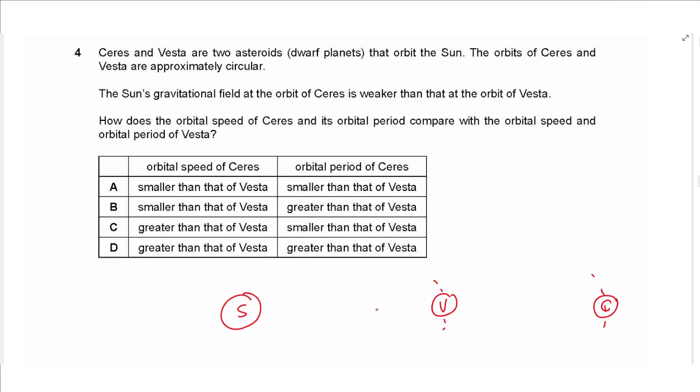How does the orbital speed of Ceres and its orbit period compare with the orbital speed and orbit period of Vesta? As you get closer to the sun, the speed of motion increases. So the speed at Vesta is higher than at Ceres, and the periodic time at Vesta is less than the periodic time at Ceres. The orbital speed of Ceres is smaller than that of Vesta, and the orbit period of Ceres is greater than Vesta. The answer is B.